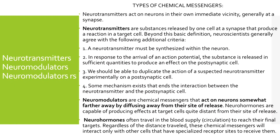Let's differentiate neurotransmitters, neuromodulators, and hormones. Neurotransmitters are chemical messengers released by one cell at the synapse that produce a reaction in a target cell. A neuromodulator is also a chemical messenger that acts on neurons somewhat farther away by diffusing away from its site of release. Hormones are capable of producing effects on target cells quite distant from their site of release.